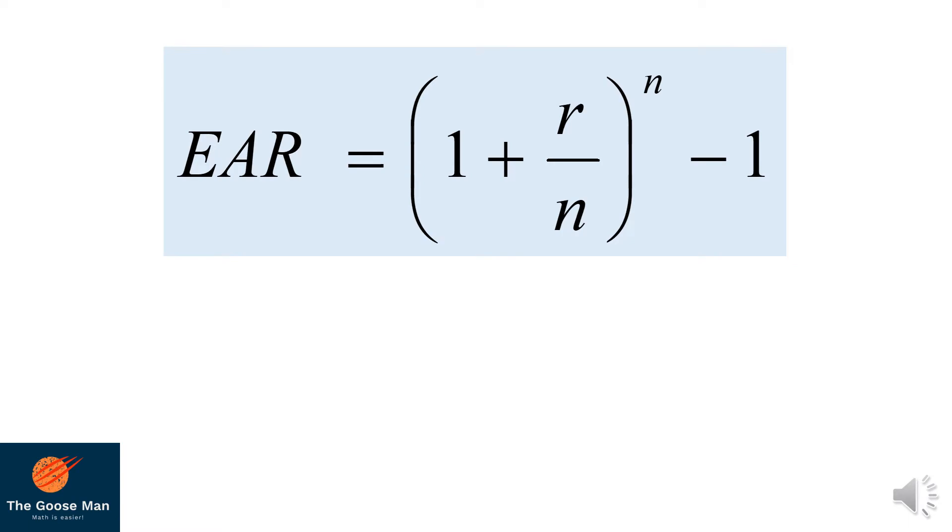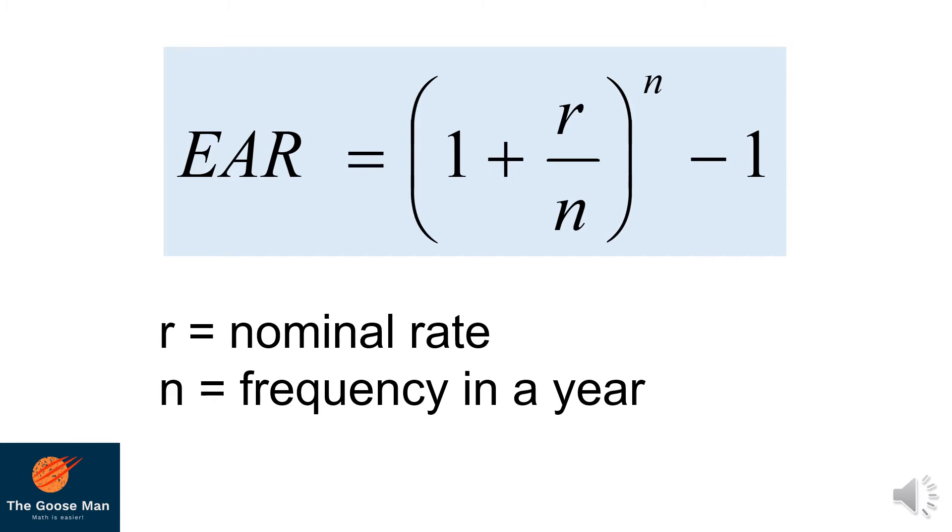For the benefit of our discussion, we will use this formula: EAR, or Effective Annual Rate, equals (1 + r/n)^n - 1, such that n equals the frequency in a year while r is the nominal rate.